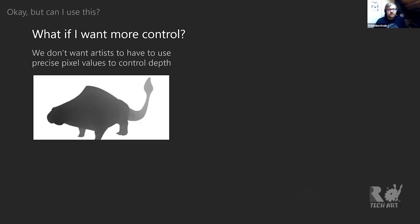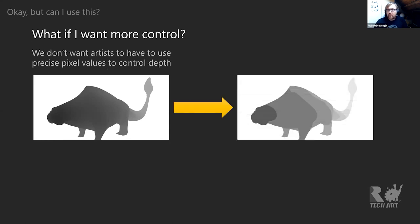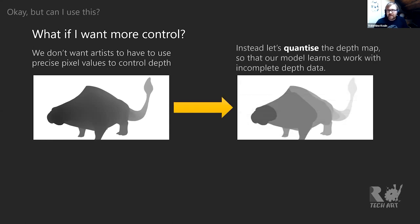The depth map already gives us the result where further away means lighter tones, but we don't want artists to use precise pixel values to control depth. So we can quantize the depth map, forcing the model to learn to work with broader tonal ranges rather than precise values.